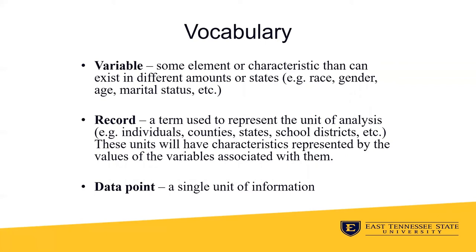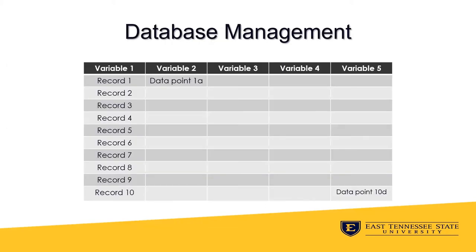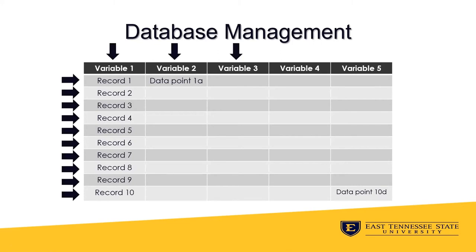A record is a term used to represent a unit of analysis such as individuals, cities, counties, states, etc. These units of analysis will have characteristics or variables associated with them that are of interest to our work. A data point is a single unit of information associated with a specific record and variable. An example of a data point is an individual's age — Johnny is 25, that is a single data point for Johnny. Now looking back at our data table, we see our records along the left-hand column and our variables along the top row. This allows for simple cross-referencing; we can find data points we need with ease by finding the record of interest and moving along that record's row and stopping at the variable of interest. For example, data point 1A is the value for record 1 and variable 2. This arrangement allows not only for quick reference but for summary and analysis of the data set overall, which we will discuss in later slides.